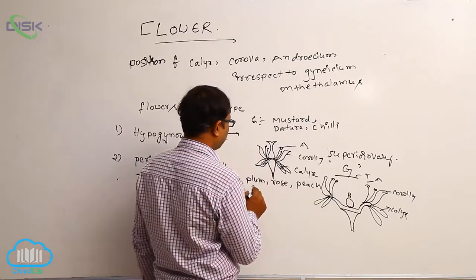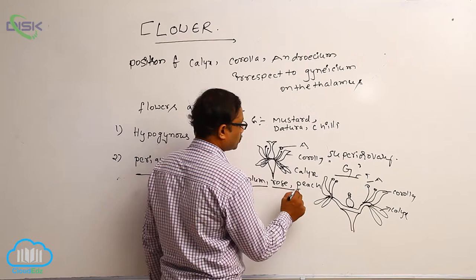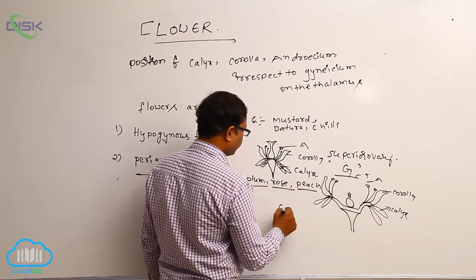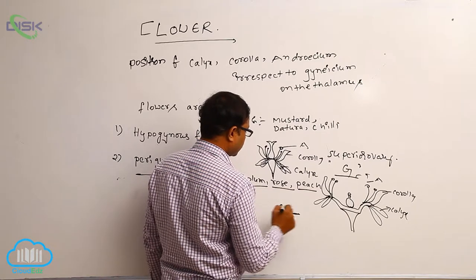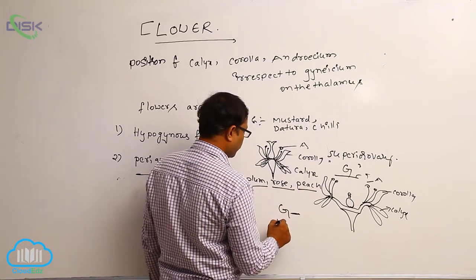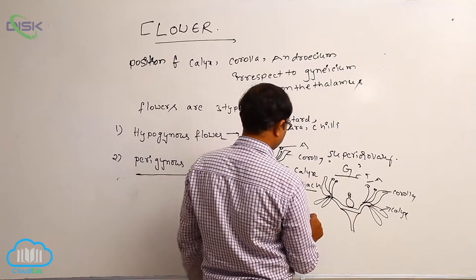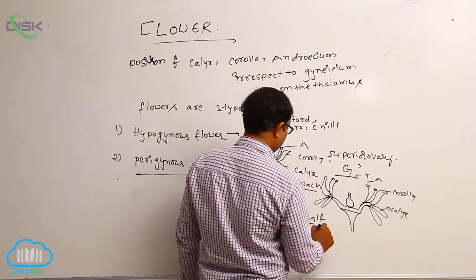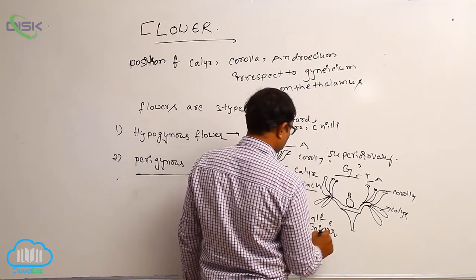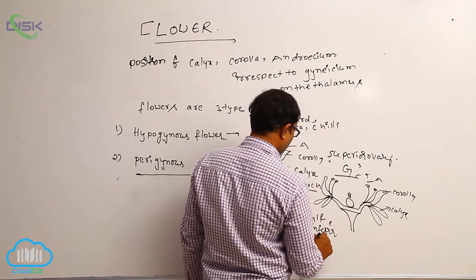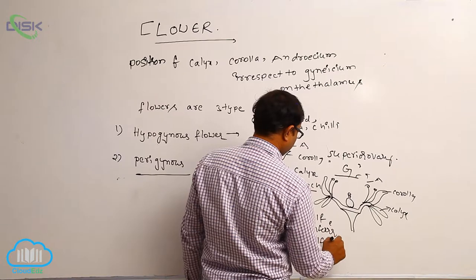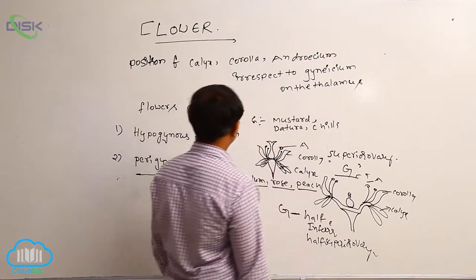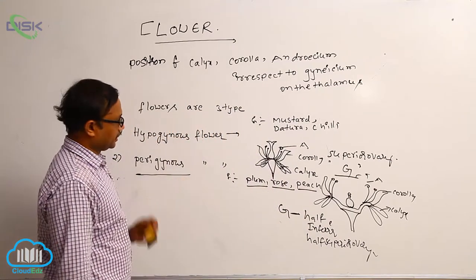So perigynous flower examples are plum, rose, and peach. Gynoecium is present at the center position. That is why it is known as perigynous flower. It has a half inferior or half superior ovary. That is known as perigynous flower.